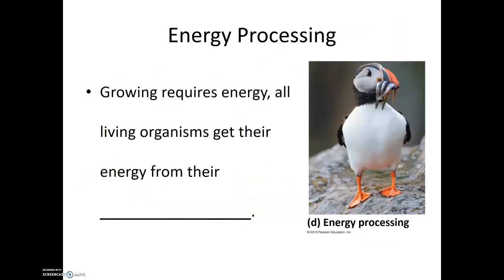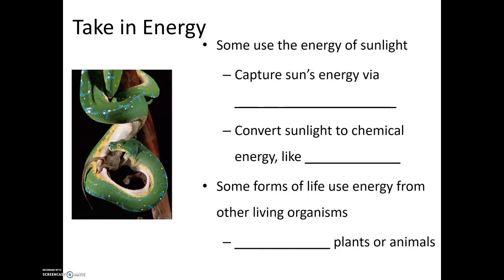In order to grow in size and complexity and to maintain order, living organisms must be able to get energy from their surroundings, from their environment. For consumers, this comes in the form of eating food. For photosynthetic organisms, they get their energy from sunlight. Some organisms can capture the sun's energy using a process known as photosynthesis, converting solar energy into chemical energy like sugars.